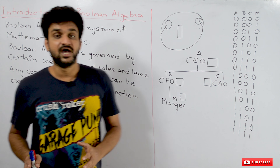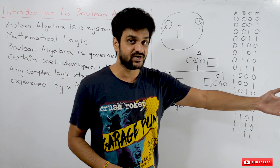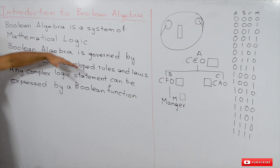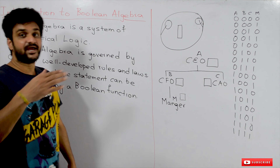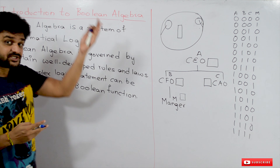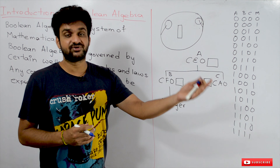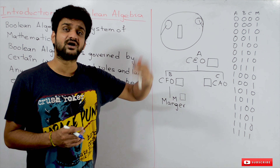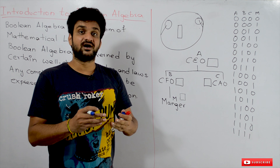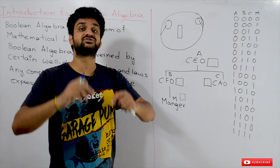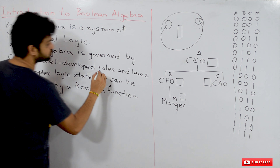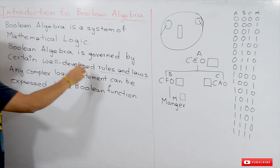We will try to understand all the rules and laws in our upcoming videos. Right now we will have an introduction to Boolean algebra. Just as ordinary algebra has its own laws and rules, Boolean algebra will also have its own laws and rules. The algebra rules include commutative law, associative law, and distributive law — these are the laws based upon which the entire concept of algebra has been developed. Similarly, Boolean algebra has its own rules and laws upon which it has been developed.